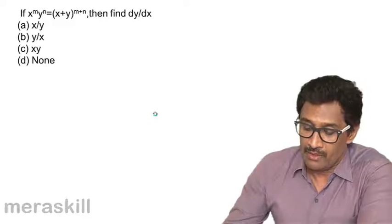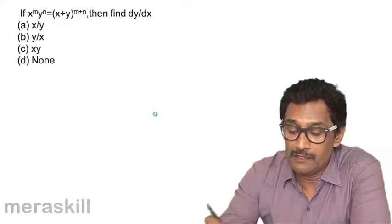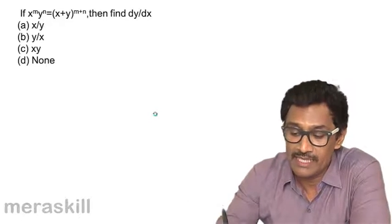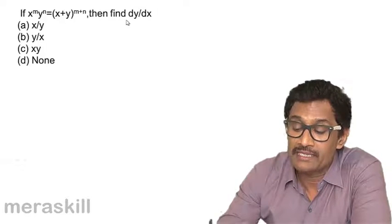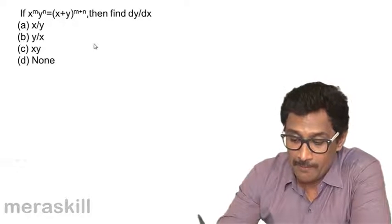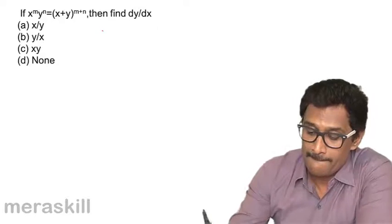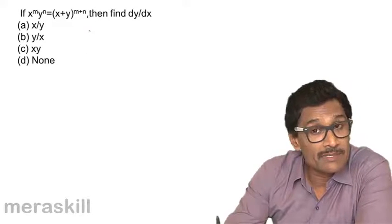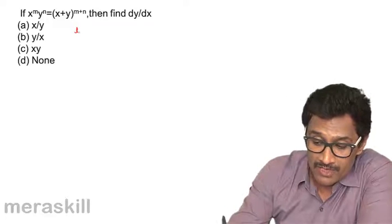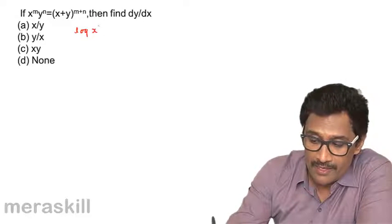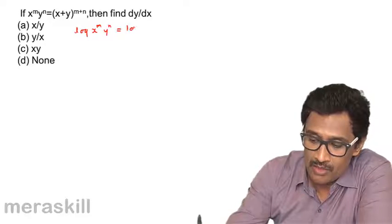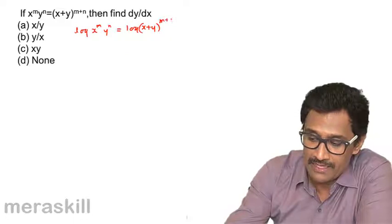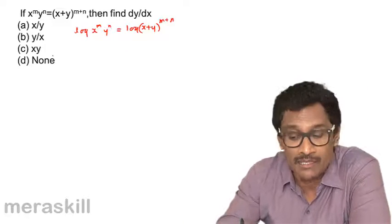Now let us see how to find dy/dx. We have x raised to m, y raised to n equals (x+y) raised to m+n. Taking log of both sides: log of x^m · y^n equals log of (x+y)^(m+n). Remember, m and n are constants.